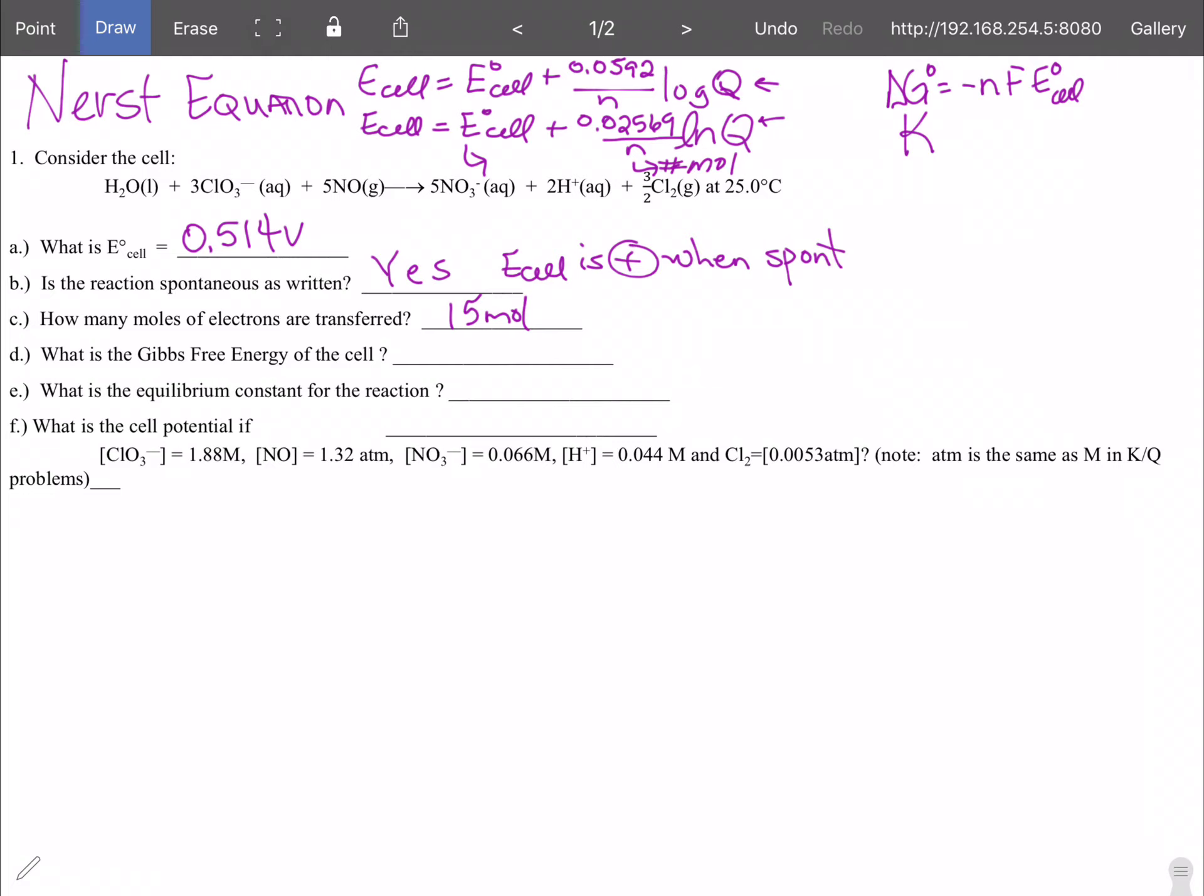That can be either standard or non-standard so that doesn't matter. So then that brings us to d what is Gibbs free energy. We said that Gibbs free energy we're going to do standard is equal to minus nFE cell. Delta G is equal to n, 15 moles of electrons, Faraday's constant which is 96485 coulombs per 1 mole of electrons times E cell which is 0.514 volts. The units will cancel out because volt is in coulombs is joules seconds and volts is joules for coulombs.